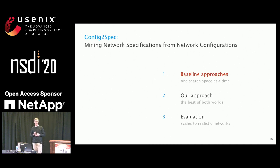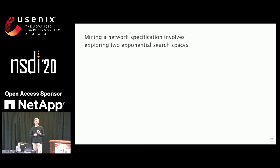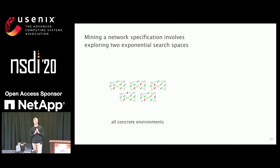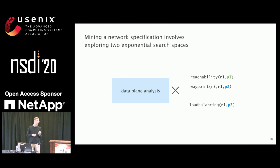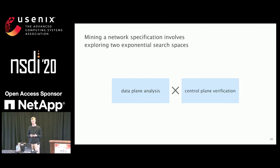Let's look at those straw-man approaches. First, you have two search spaces. The failure model gives you the space of all concrete environments for which you want to find the policies that hold. And your policy language gives you the set of all policies you want to look at. We can look at those two spaces in isolation — using data plane analysis to tackle the failure model, and control plane verification to look at the policy space.